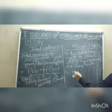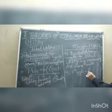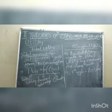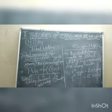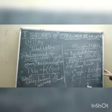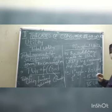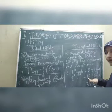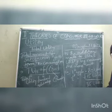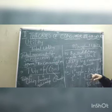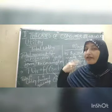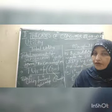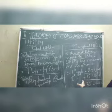Taking the same example: the first apple gave me 20 utils, the second apple gave me 15 utils. Total is 35 utils. The marginal utility is what I added to 20 — that is 15. So 15 is the marginal utility; it is the additional utility derived by taking the second apple.